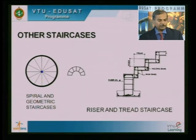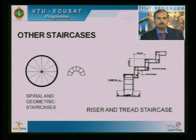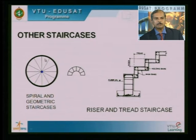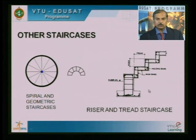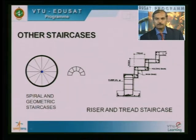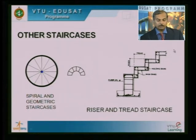These are the other types of staircases. The spiral staircase and geometric staircases — in the spiral you start from one side and climb in a spiral manner. There is also an important and popular staircase — the riser and tread staircase — which we can find even in a residential building. If you see the flight, there is no waist slab. Instead, the steps are formed by the riser and the tread — all small rectangular elements connected monolithically amongst the different elements.